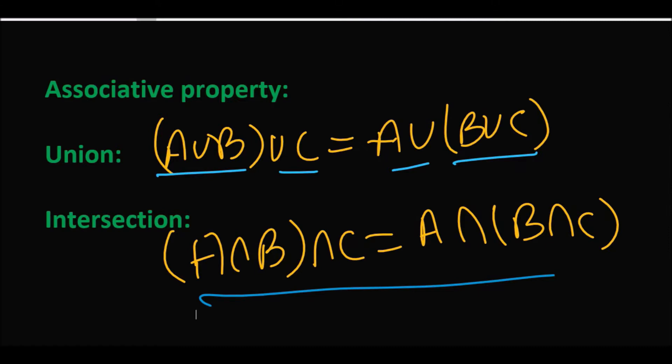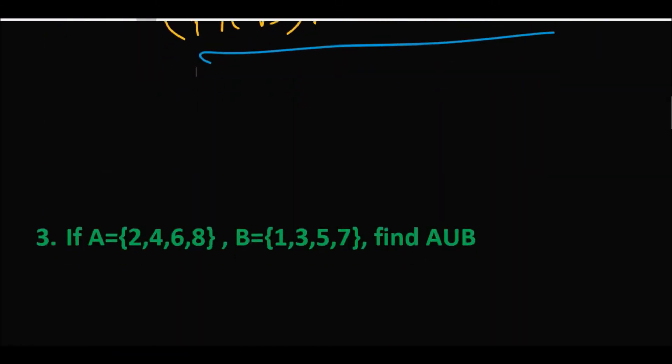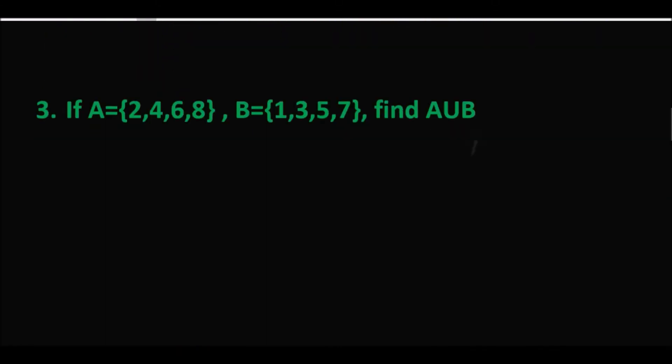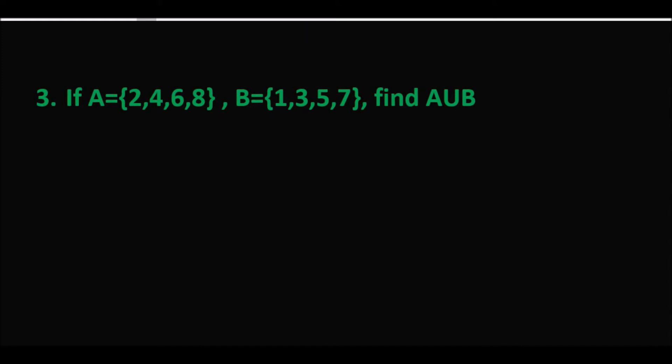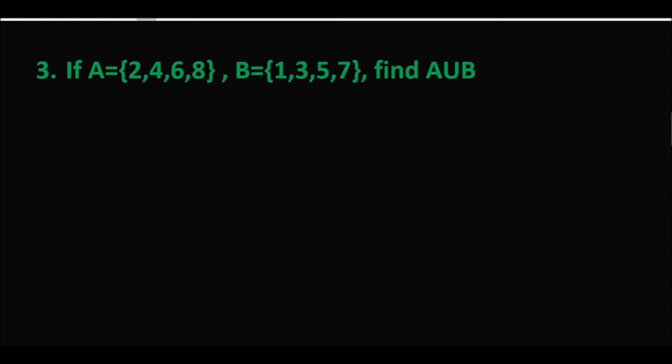उसके बाद हम exercise के question number 3 की तरफ move करते हैं। बाकी parts बहुत easy हैं — question number 1 blanks का है और true/false है, वो बहुत easy हैं, आप notes में से देख सकते हो। Question number 3 में आप से पूछा गया है that if A = {2, 4, 6, 8} and B = {1, 3, 5, 7}, find A union B.